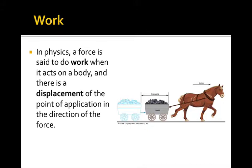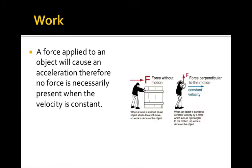Now, work. What is work? Work is, we said that energy is ability to do work, so something's happening when work is done. But a force is said to do work when it acts on a body and there is a displacement. So in order for something to happen, something has to move, at the point of application in the direction of the force. So that's also important that the force, a displacement has to happen in the direction of the force. And then work is done. So a force applied to an object will cause an acceleration, and therefore, no force is necessarily present when the velocity is constant.